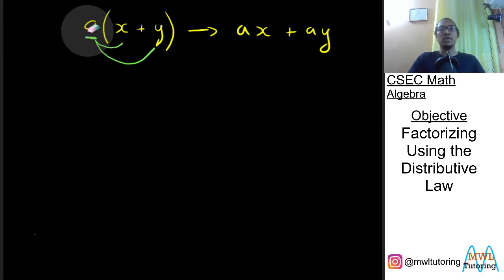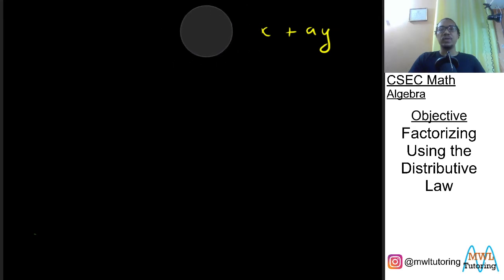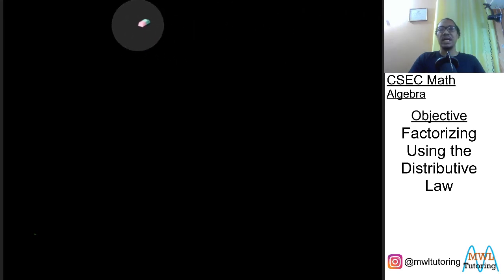But consider for a moment what if we didn't start off in that way? What if we started off in reverse with ax plus ay? And I wanted to get it in that form with the brackets.